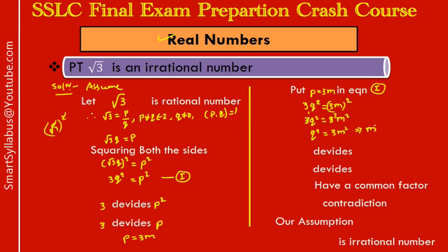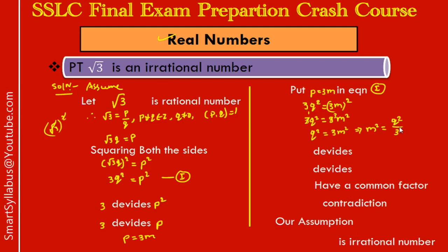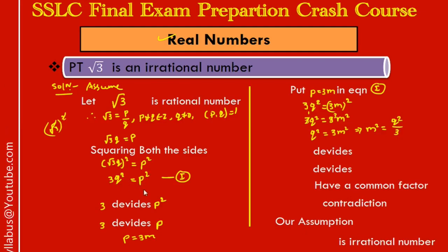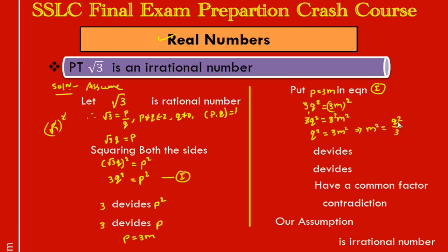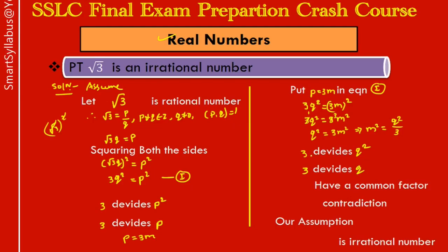From q² = 3m², rearranging gives m² = q²/3, which means 3 divides q². By the same Theorem 8.3 — if a number divides the square of a number, it also divides the number itself — we get that 3 divides q.